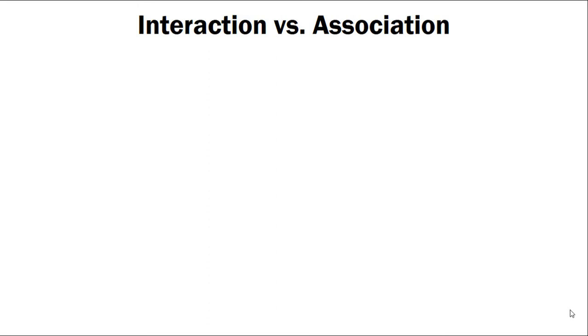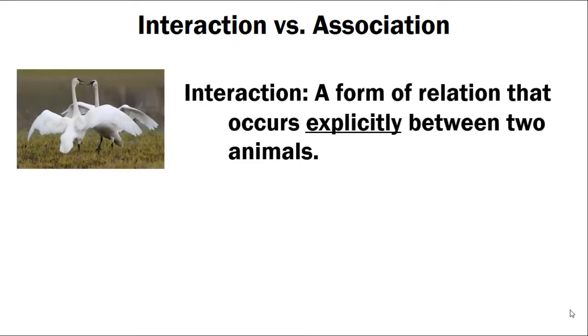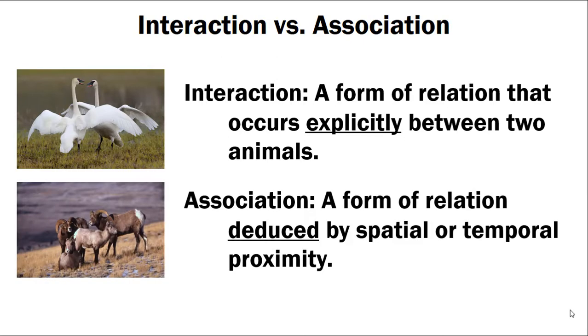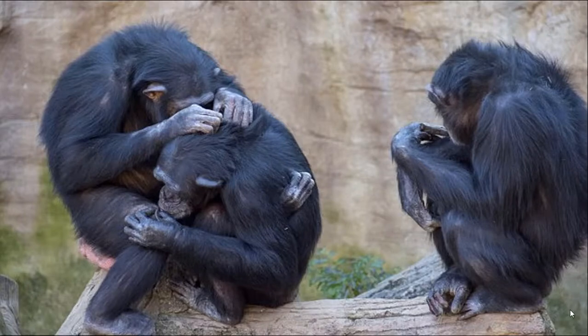Now we'll briefly introduce an important concept in behavioral studies: the quality of observations a researcher can collect. The main distinction is between an interaction and an association. An interaction is an explicit behavior that clearly links two individuals — classic examples include grooming, mating, sharing food, or fighting. Association is defined by spatial or temporal proximity and is a lower quality of data because we are only assuming that there is an interaction. For example, with three chimpanzees, interaction data would record only the two chimpanzees actively interacting, whereas association data would include all three in the same group, sacrificing information about specific individual behaviors.